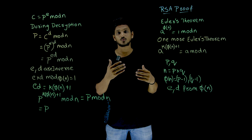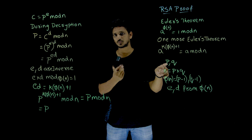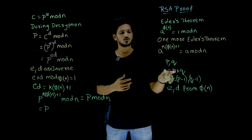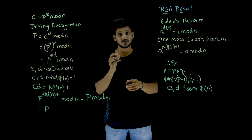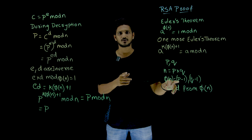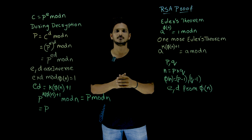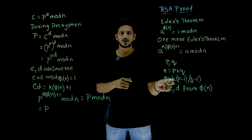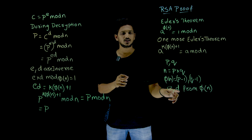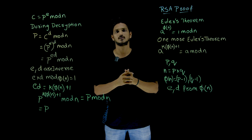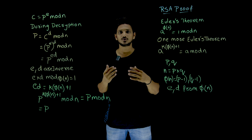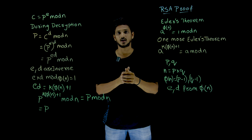Let's review what we have done in our RSA algorithm. We generate two prime numbers p and q. From these two prime numbers, we generate n, where n equals p multiplied by q. From n, we identify phi of n, which equals (p minus 1)(q minus 1). From phi of n, we generate e and d, which are inverses of each other. The values e and n form the public key, and d is kept as the private key.